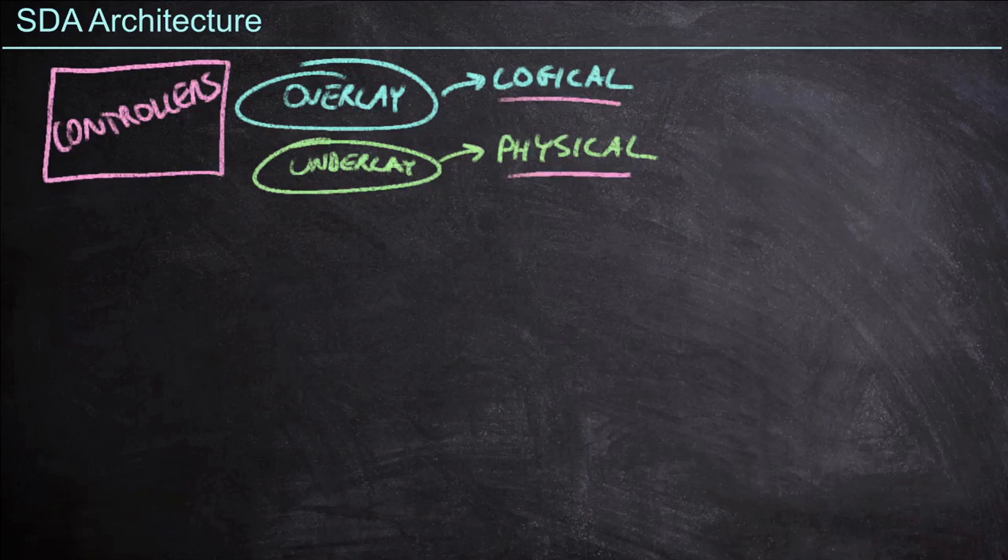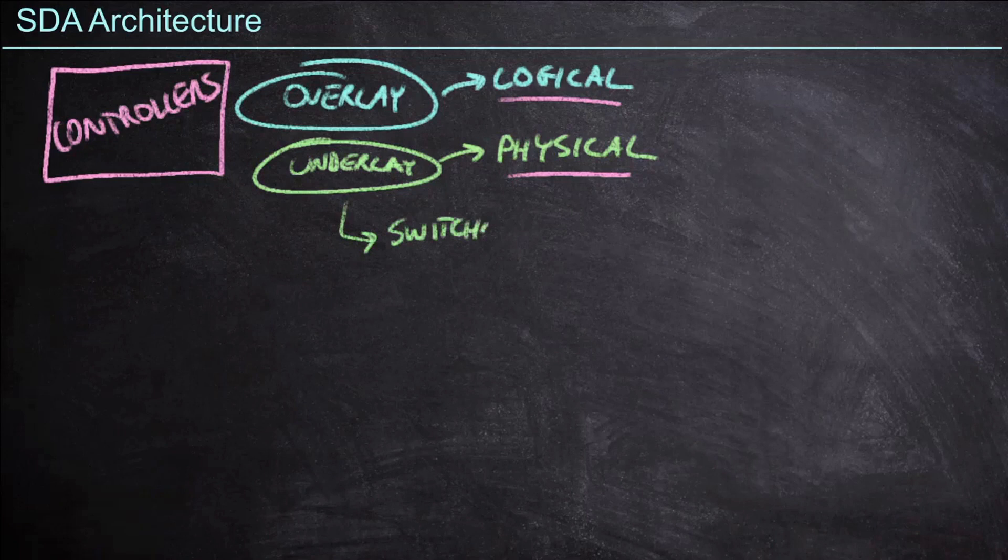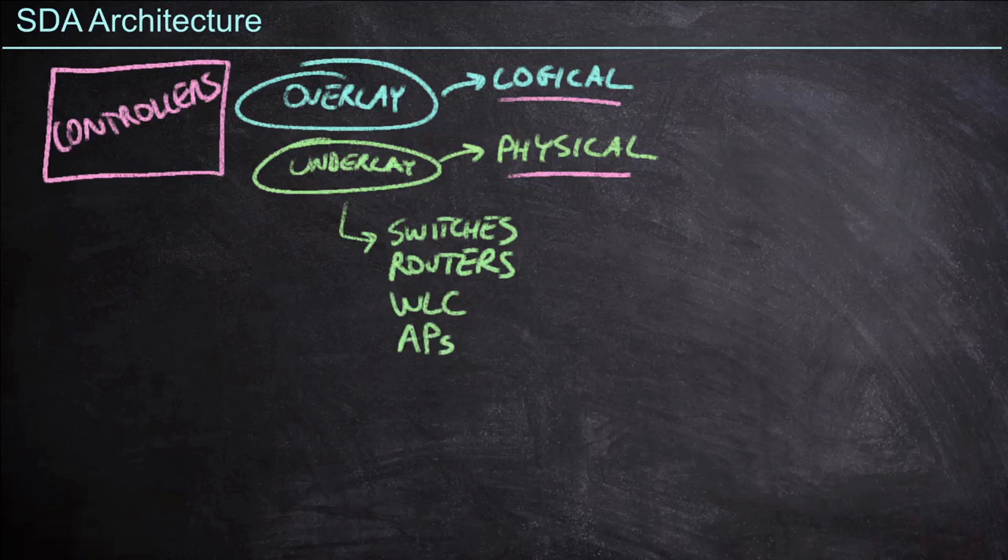What does some of this equipment look like? Well, first of all, this underlay is going to consist of a lot of the same equipment that we already are familiar with. For example, we have switches and routers, and then we have wireless LAN controllers and wireless access points. This is how we're going to build our physical underlay.